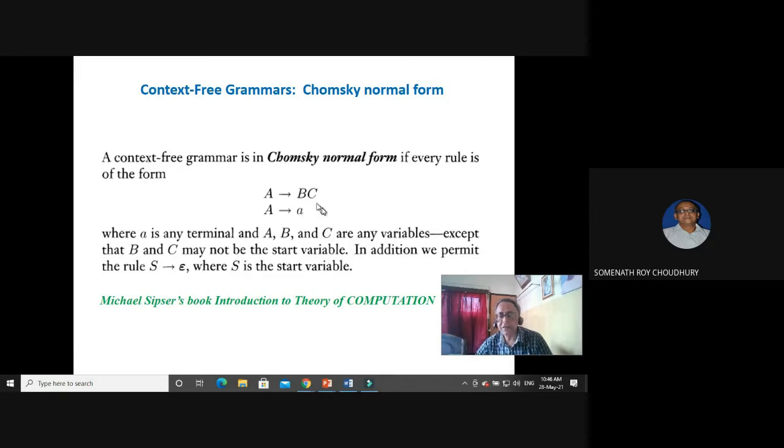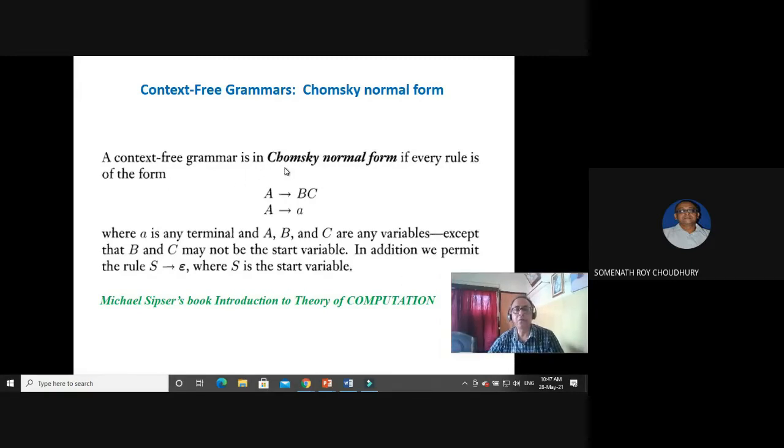What is the advantage of it? Whenever the rule left hand side one or right hand side two, it can be easily understood by our computer which is binary, yes or no. This is the rule: a context free grammar is in Chomsky's normal form if every rule is of the form A to BC or A to a, where a is the terminal, and B, C are variables except that B or C may not be the start variable. In addition we permit, only the start variable, if A is the start variable, it can go to epsilon. No other variable.